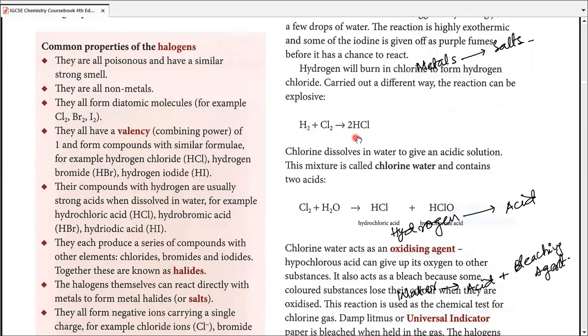Hydrogen will burn in chlorine to form hydrogen chloride. However, the reaction would be much slower if they are reacting with bromine or iodine. In this case, hydrogen plus a halogen gives you an acid.